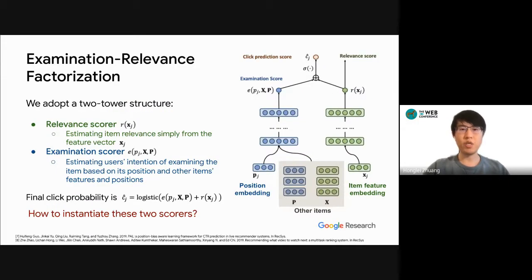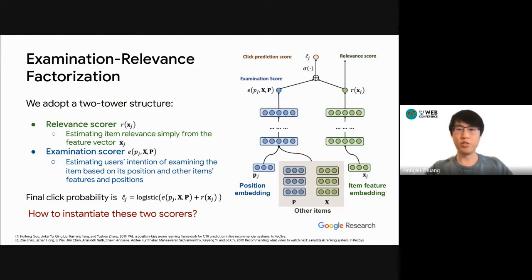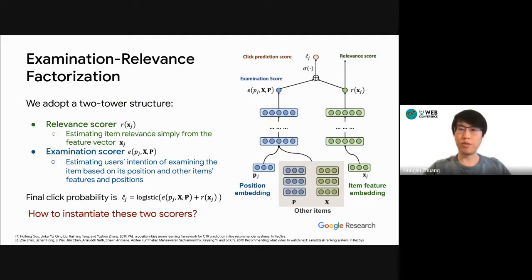As a high-level overview, we adopt a two-tower structure where we have a relevance score which estimates the item relevance simply from their feature vectors, and then we have an examination score which estimates the user's intention to examine an item based on its position information, or other surrounding items' position information or their relevance information. The final click probability is obtained by taking the sum of scores from both towers, and then we use a logistic function to scale it to be between 0 and 1.